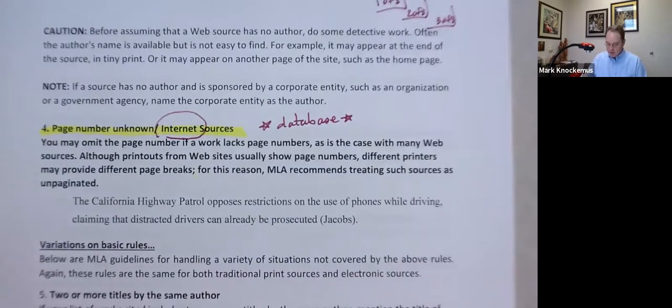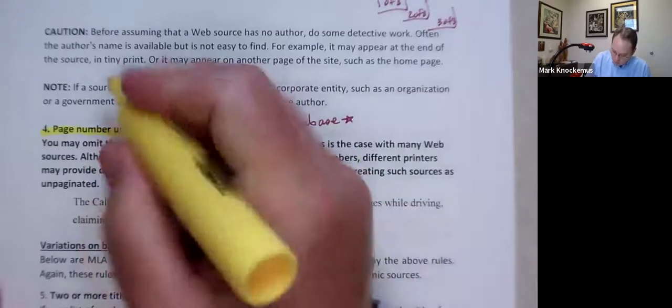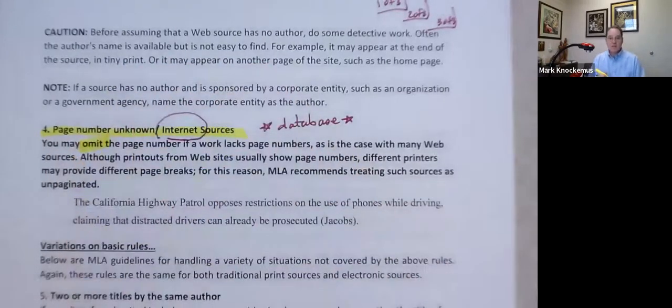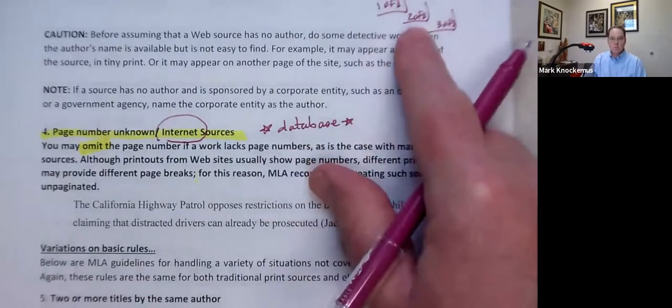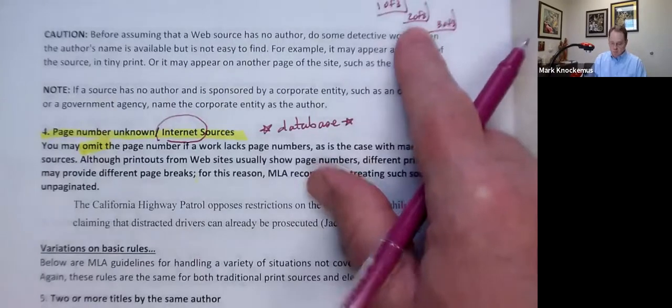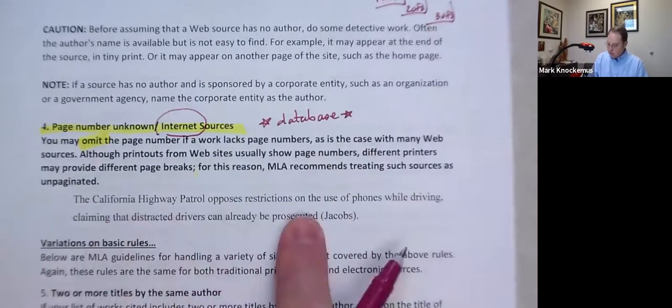So now it's a little bit different. What happens here is we omit the page number because we don't know. Now, sometimes you'll find an article which does have the page number from that magazine or journal or newspaper. And if you find one of those, boom, go with it. But otherwise, we can't use these pages.